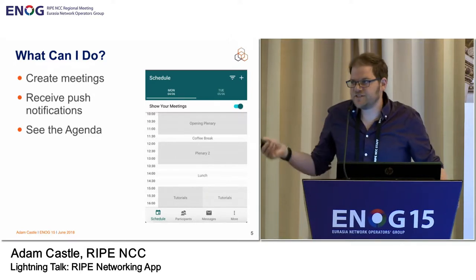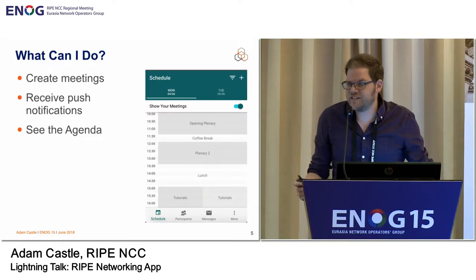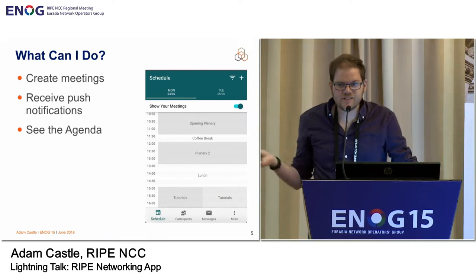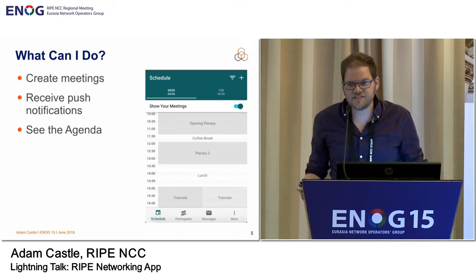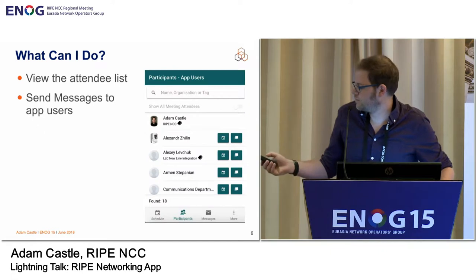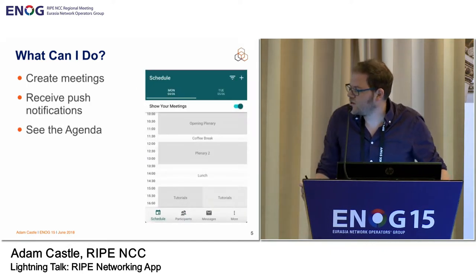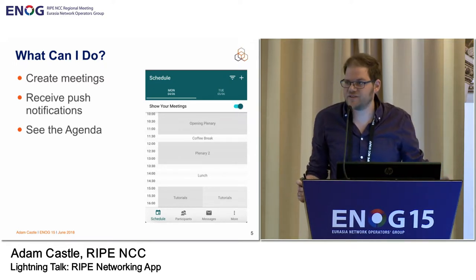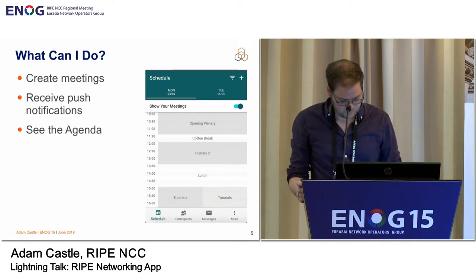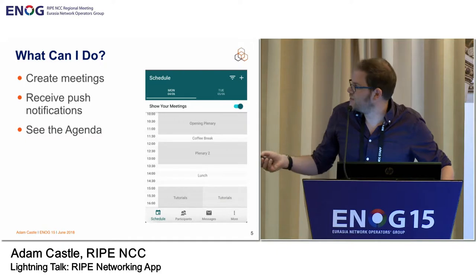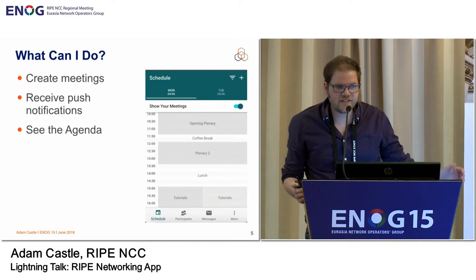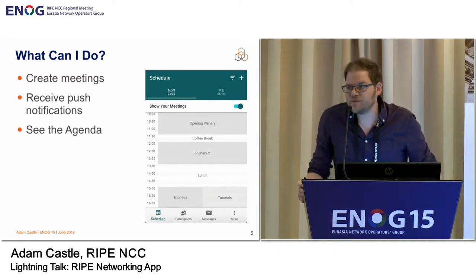The first screen you see after you've logged in and gone through the intro screen is the agenda. This is a screenshot taken the other day, but it's actually a live agenda, so it's been updated since then. From this agenda, you can book slots and meetings with yourself — you can block out time in your calendar so other people can book time with you. Once you start booking meetings, you can use the toggle in the top right corner to flip between the full agenda and your own agenda.